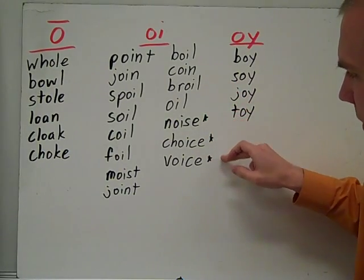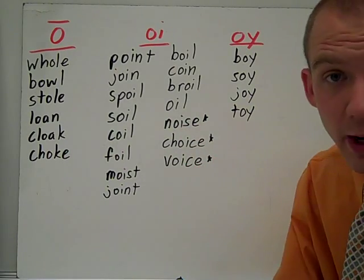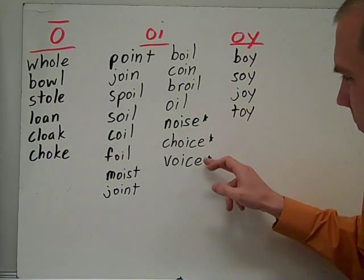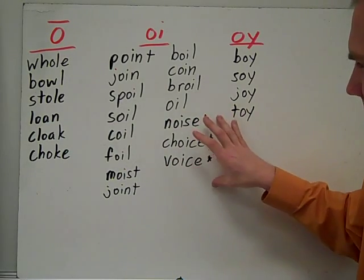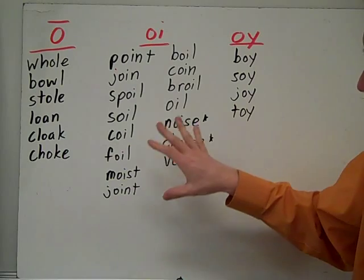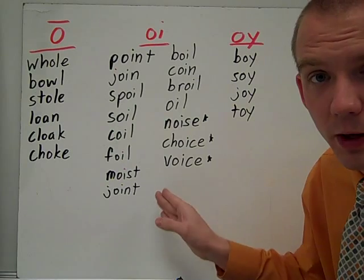Oil. You have noise, choice, and voice. They're starred because they have the OI and they say OI. But they end in the E which sometimes does the long sound so that kind of starred them. They fit here. Some people might say you want them in an oddball column but I felt they fit better in this column, the OI.